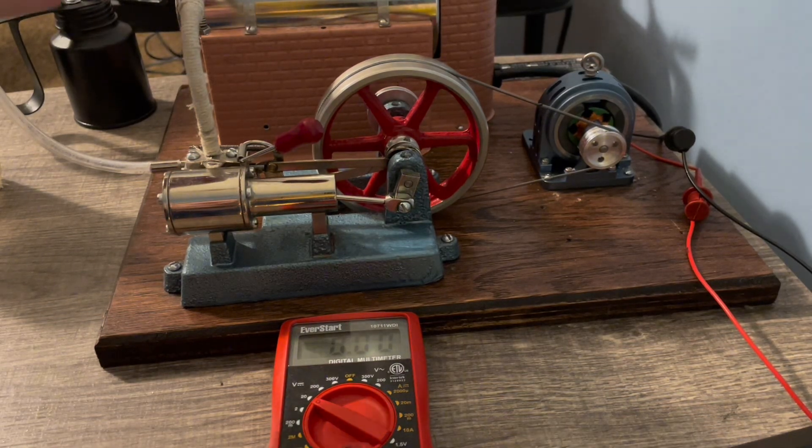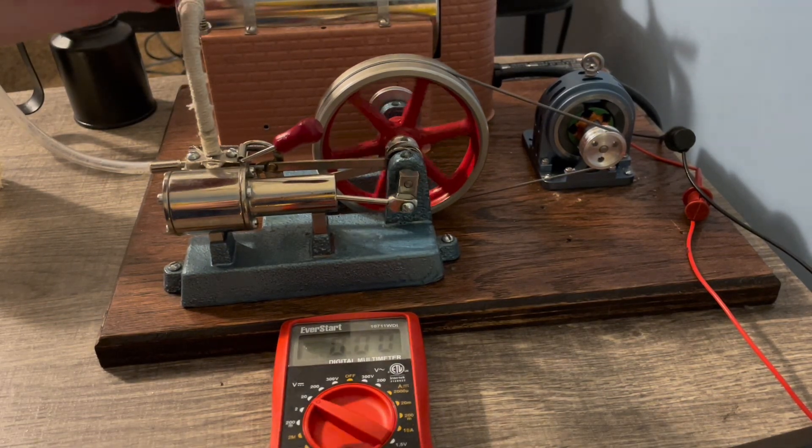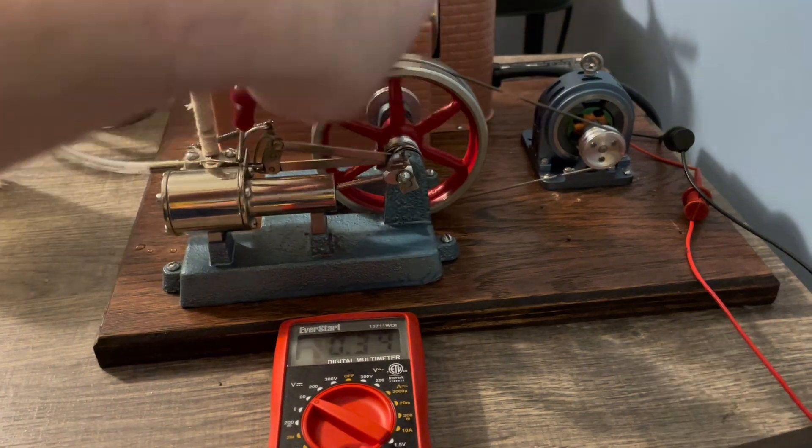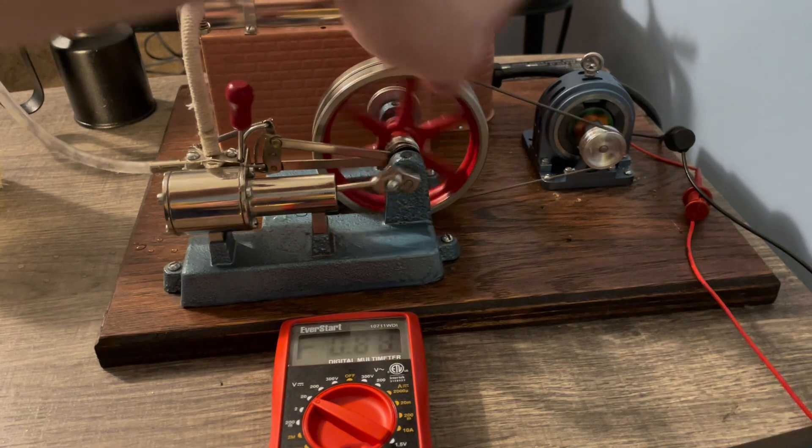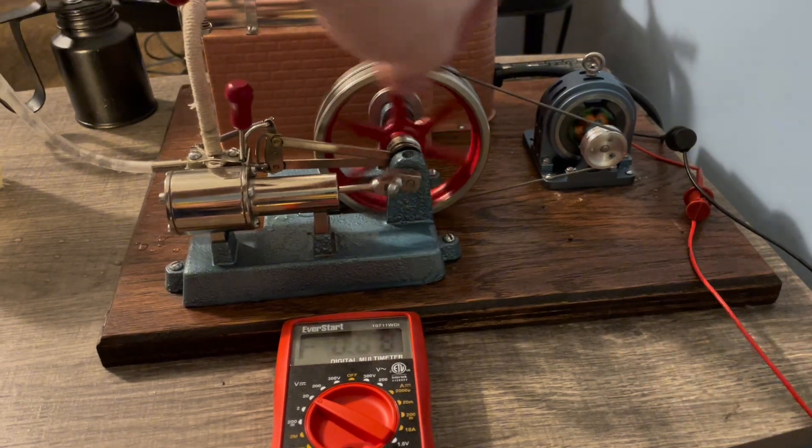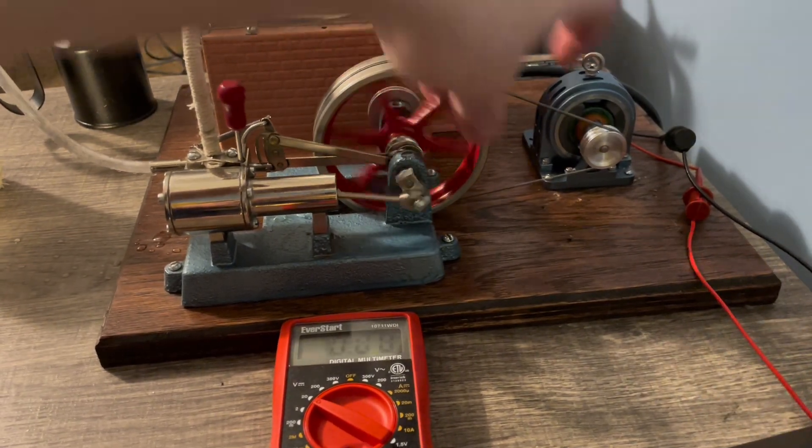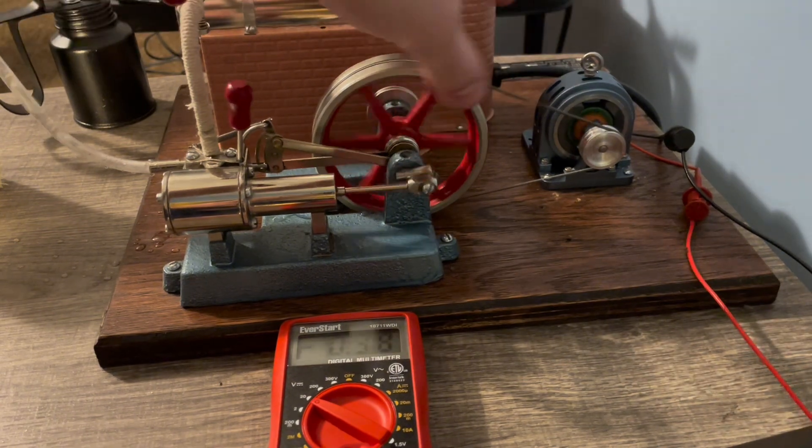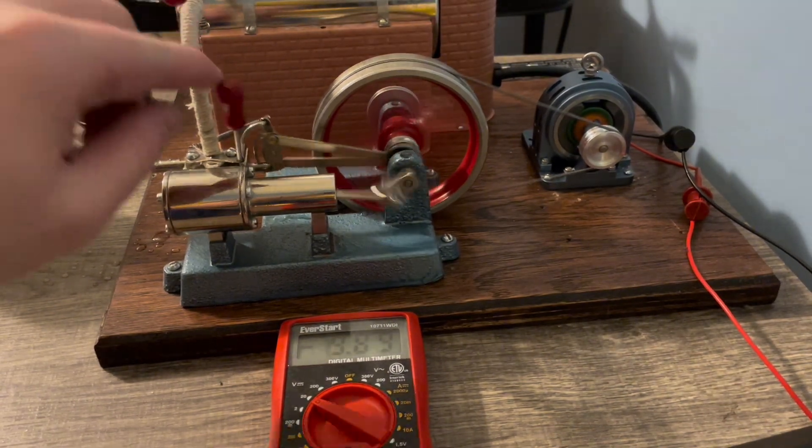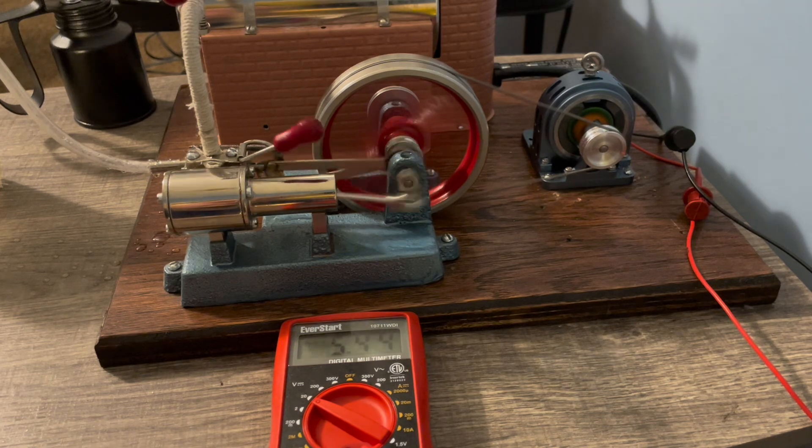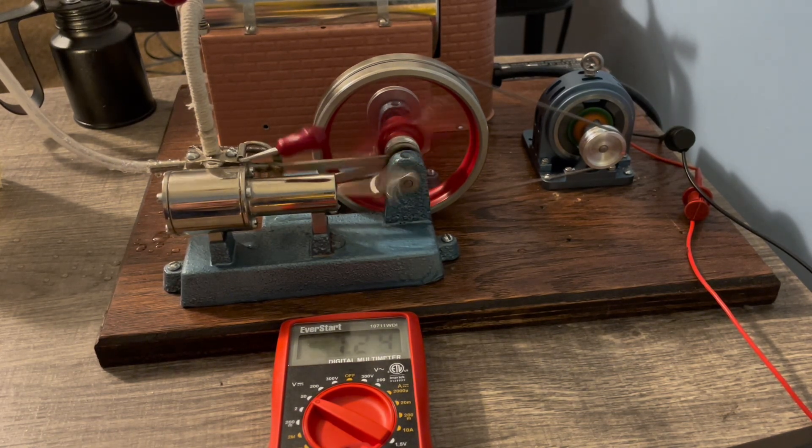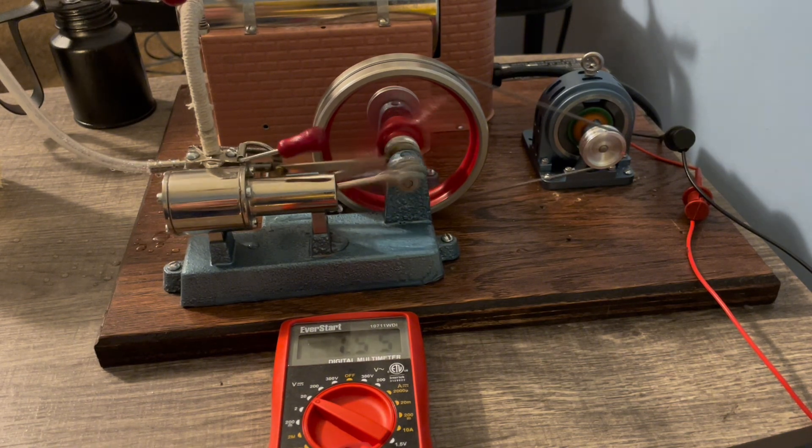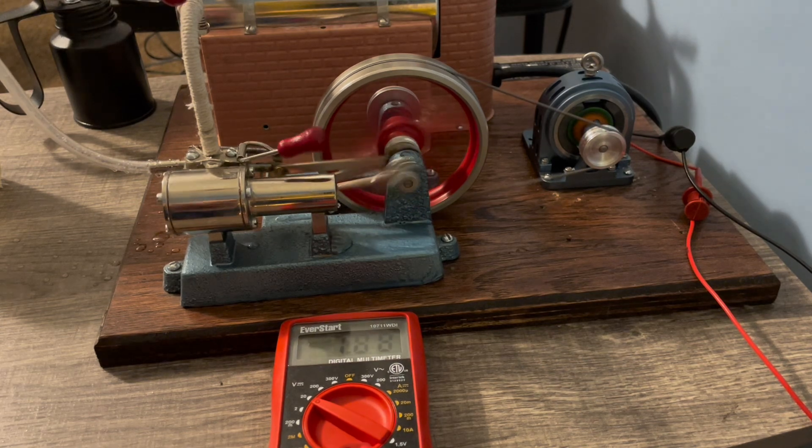Alright, so the Jensen 20G is up to steam. So now, let's let some steam in and see what happens. I might actually have to spin the Jensen the other way. Let's see. There we go. Alright, right now we're at 7 volts. So that's not terrible. We'll just let the engine warm up for a little bit.